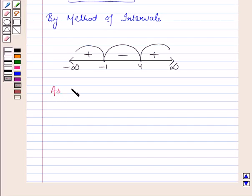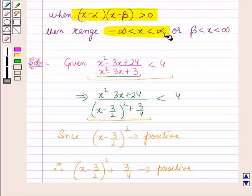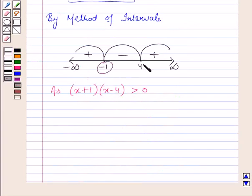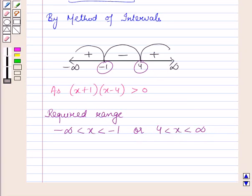Now since (x plus 1)(x minus 4) is greater than 0, we use the formula from the key idea: when (x minus alpha)(x minus beta) is greater than 0, the range is minus infinity less than x less than alpha, or beta less than x less than infinity. Here alpha is minus 1 and beta is 4, so the required range is minus infinity less than x less than minus 1, or 4 less than x less than infinity. This is the solution of the question. Hope you all have enjoyed the session.